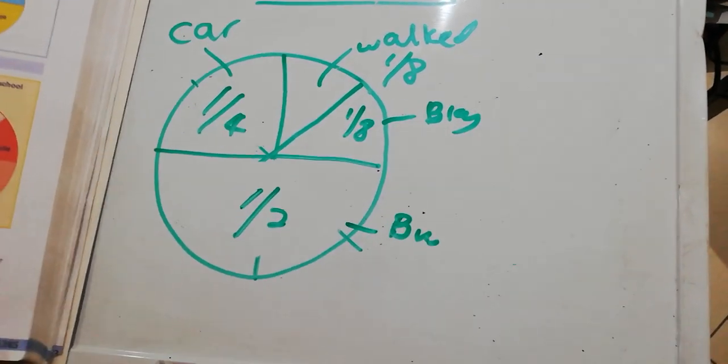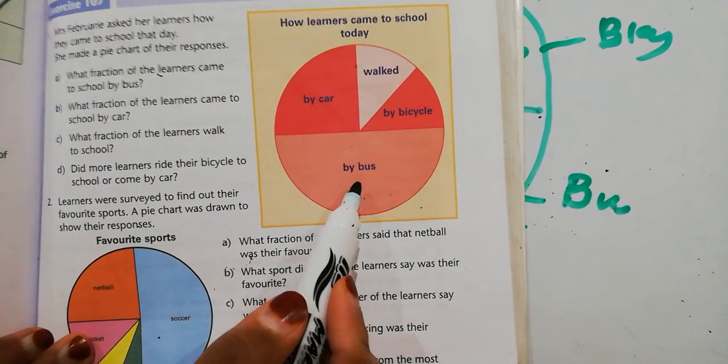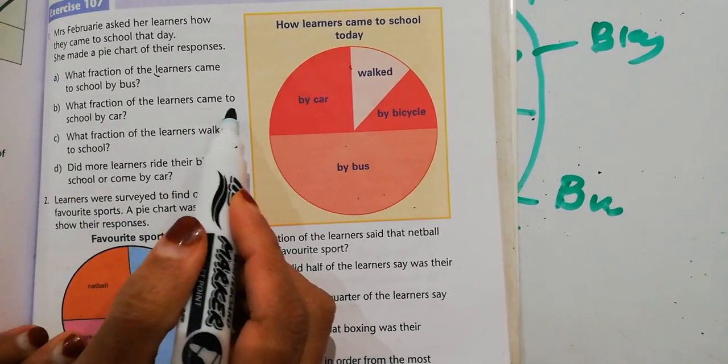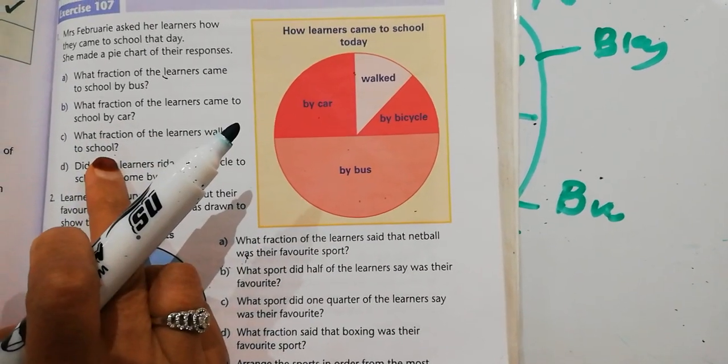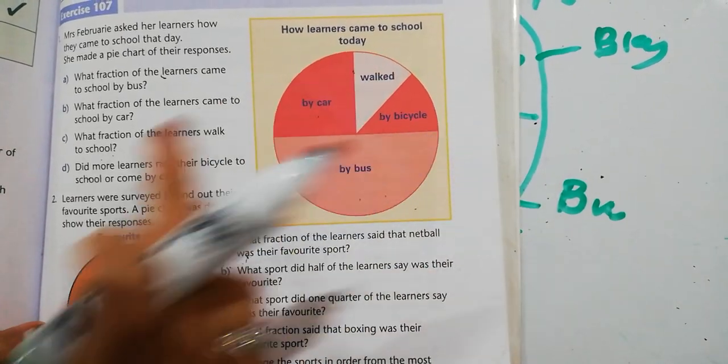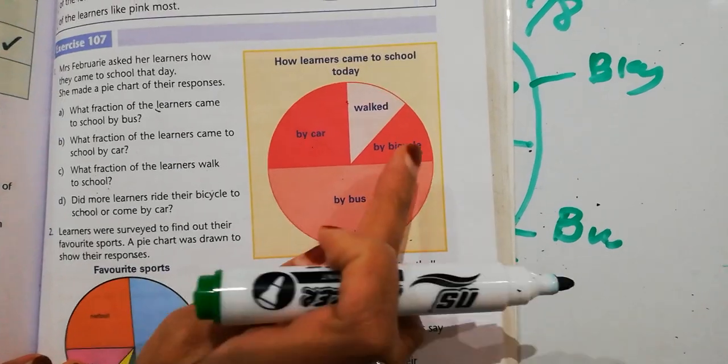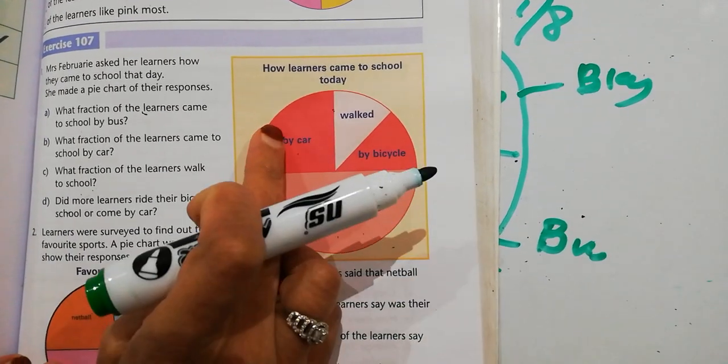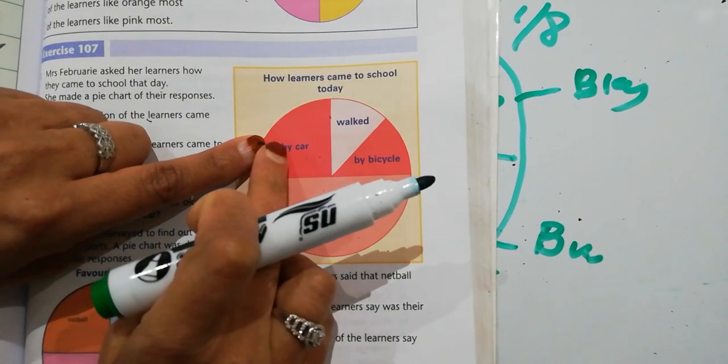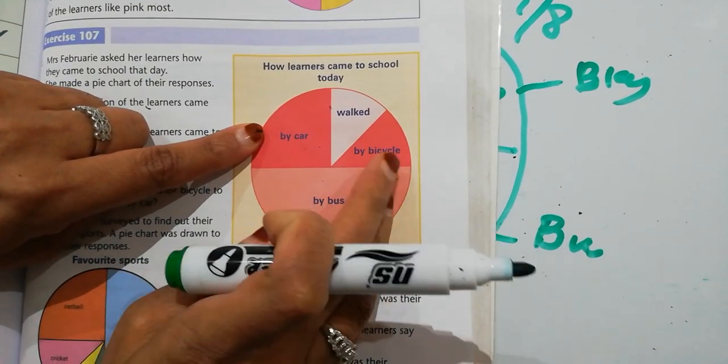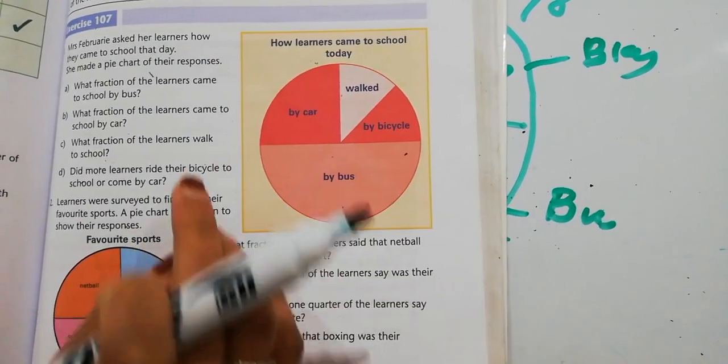So if you go to the questions, it says, what fraction of the learners came to school by bus? You're going to be able to answer that. What fraction of the learners came to school by car? What fraction of the learners walked to school? Did more learners ride their bicycle to school or come by car? So you go to bicycle and you go to car and you say, look, which part looks bigger? Which part is shaded in more? Which fraction is bigger? You can look at it in different ways. And you can clearly see that car is shaded in more.